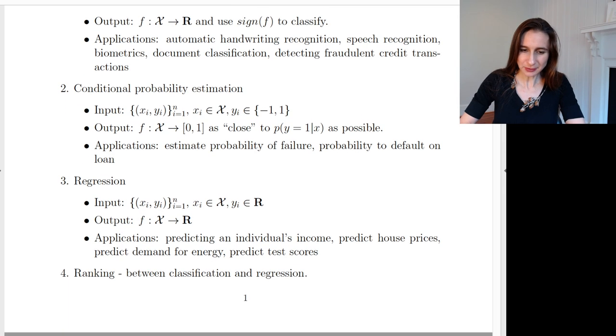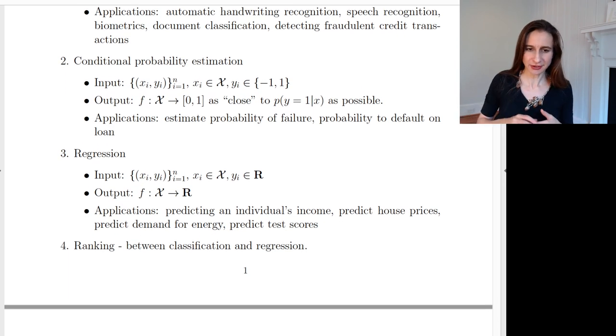The second problem is a variation on a theme, where instead of predicting yes or no, you're going to predict the probability of yes. So the input is again these x, y pairs, and then the output is a function f which is as close as possible to the probability that y equals one. Instead of saying yes or no, you say what's the probability of yes?